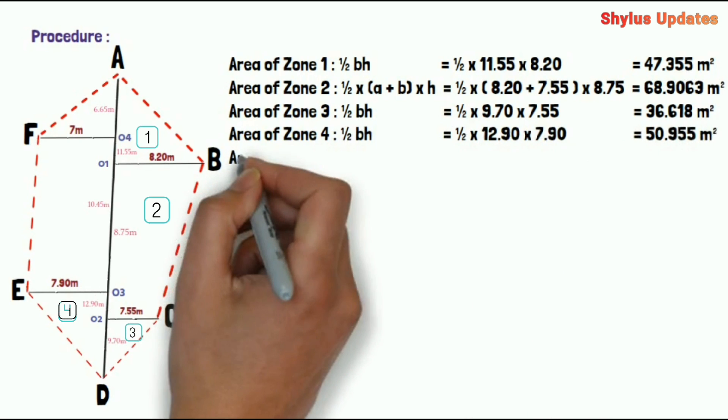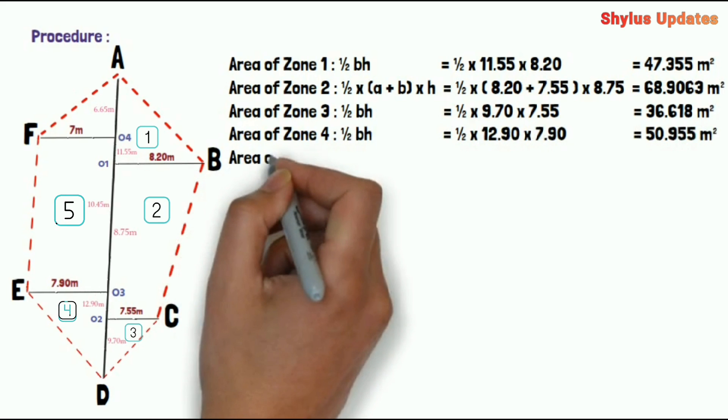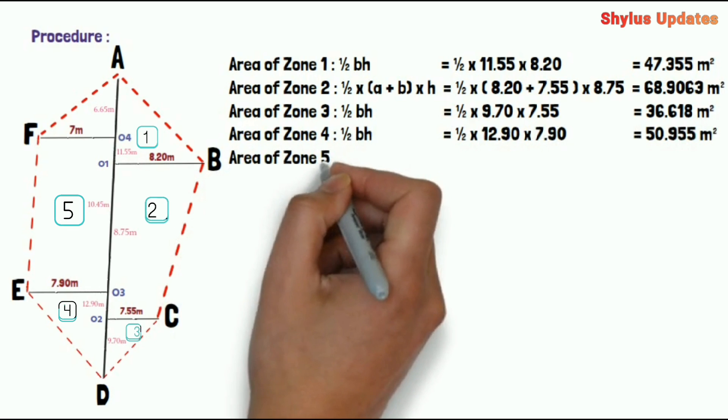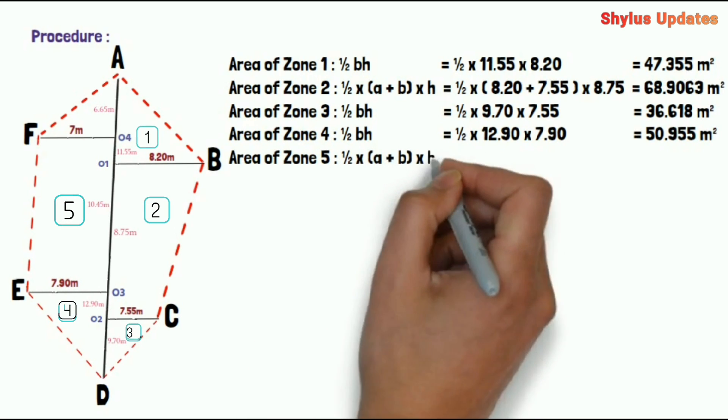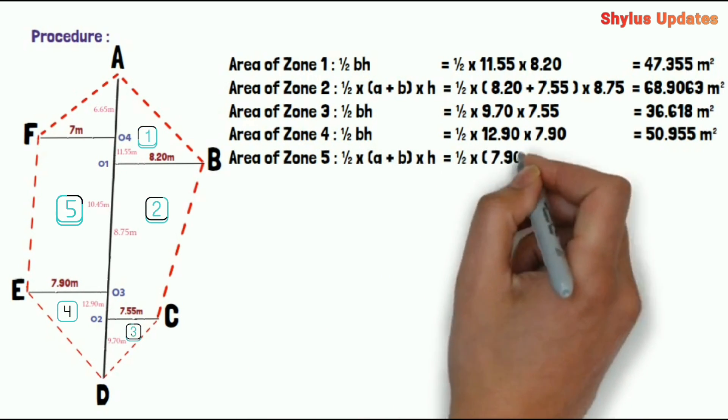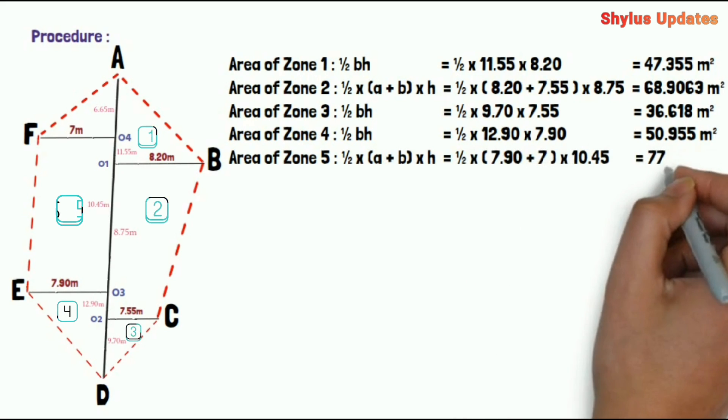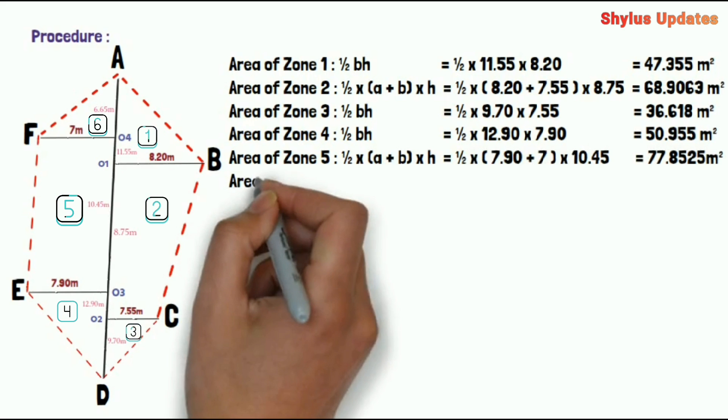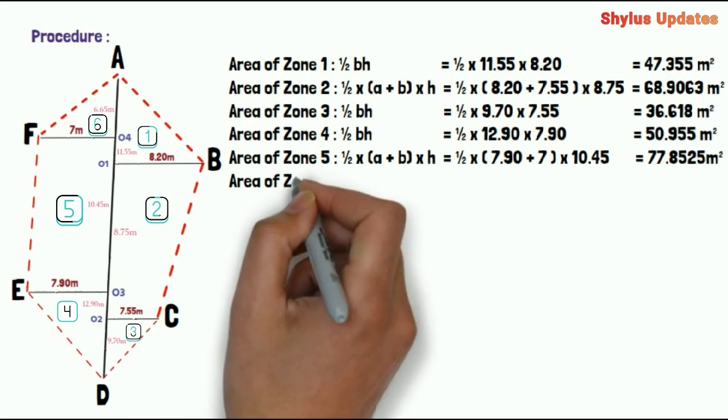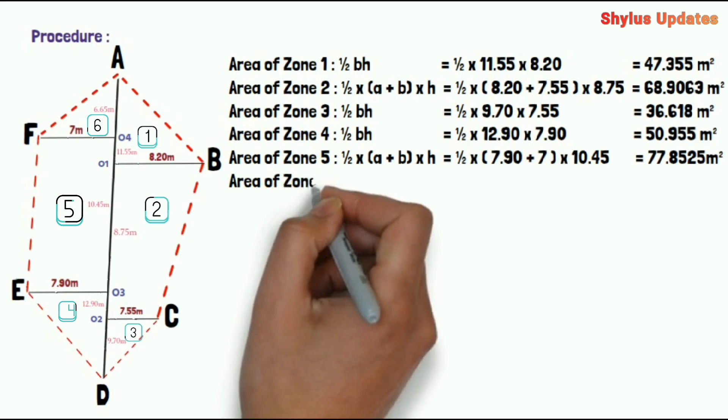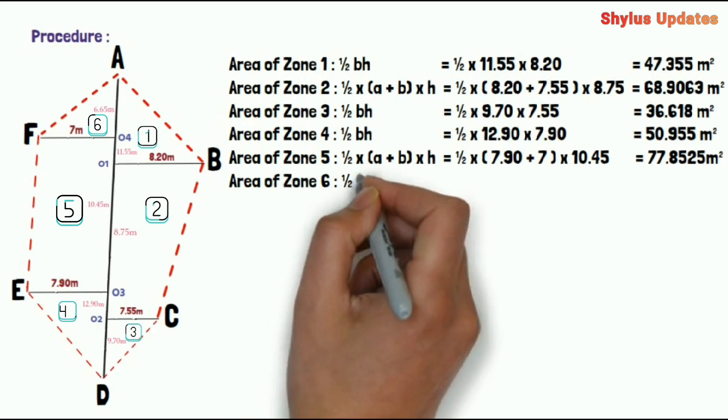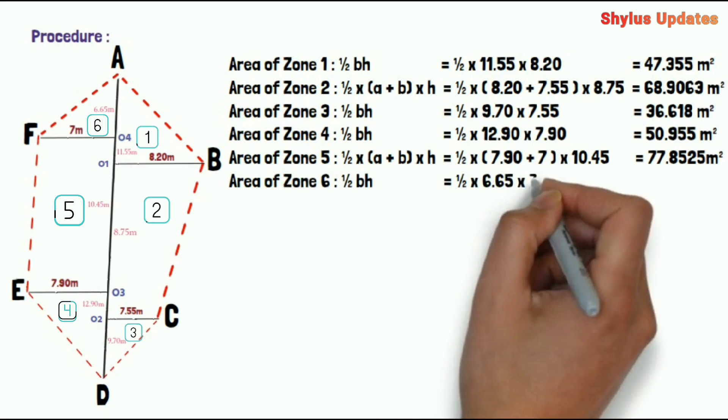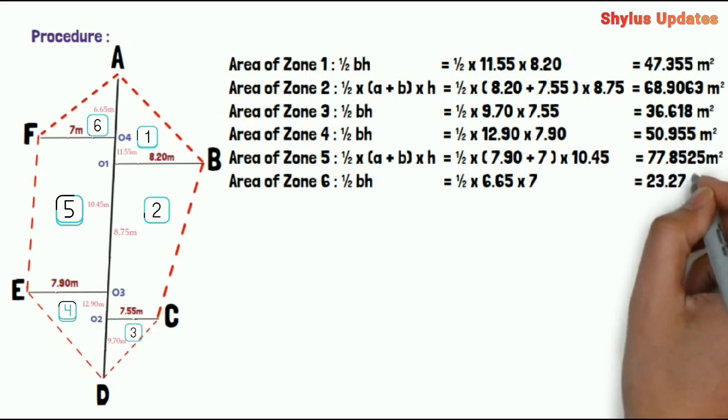Area of Zone 5: Zone 5 area looks like trapezium, so use area of trapezium formula 1/2 × (A + B) × H. When you substitute the values, you get the answer as 77.8525 meter square. Area of Zone 6: Zone 6 area looks like a triangle, so we have to use area of triangle formula 1/2 B × H. When you substitute the values here, you get the answer as 23.275 meter square.